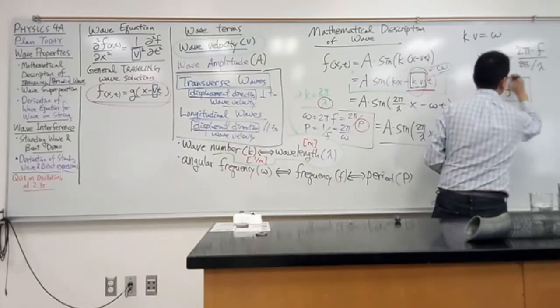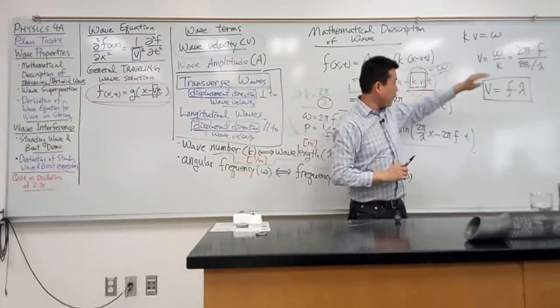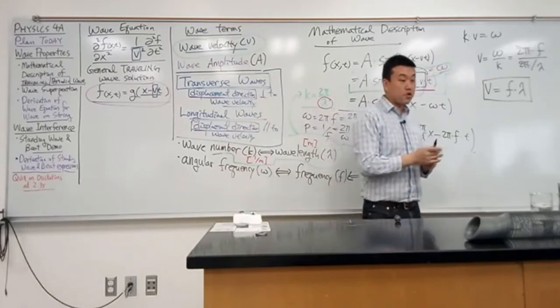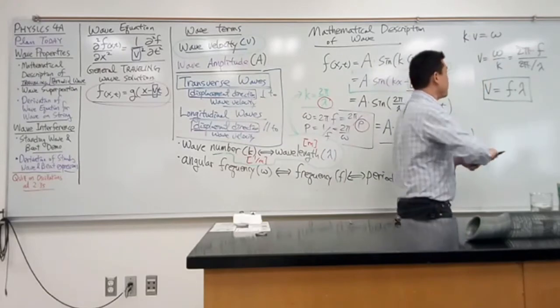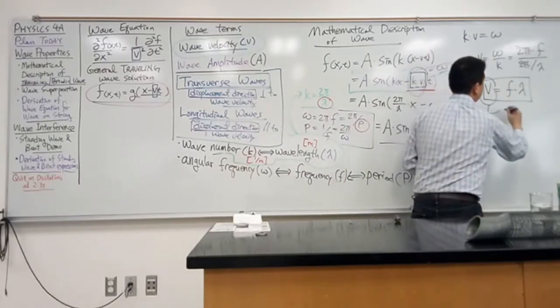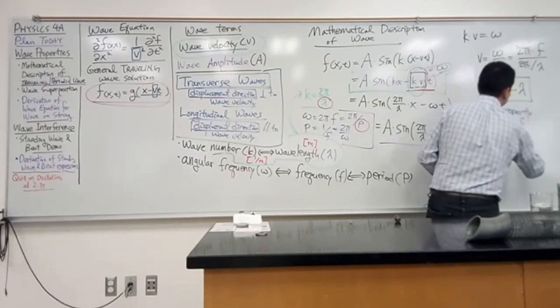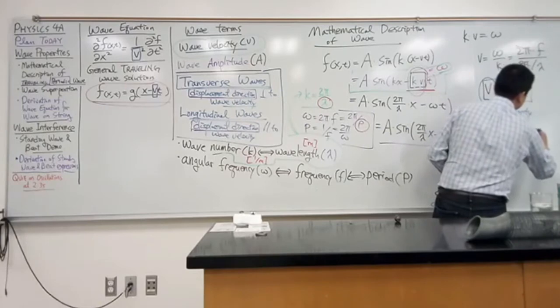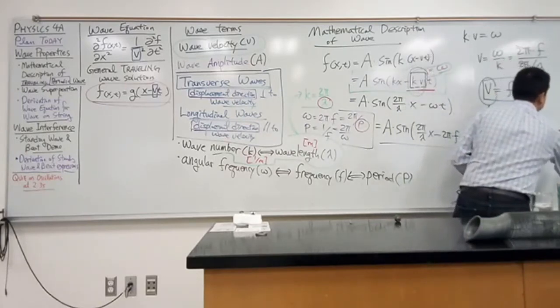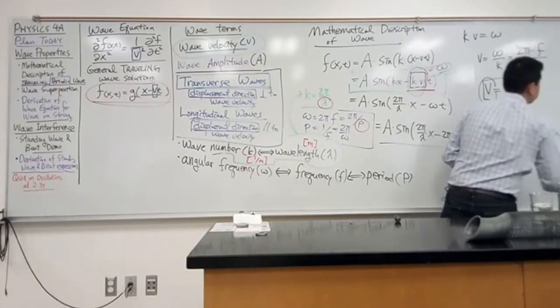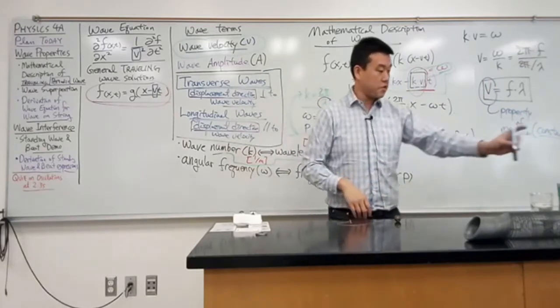This is one of the most important relationships. But as you learn this relationship, what you have to know and memorize and internalize is the fact that this wave velocity V is property of medium. Property of medium. Another way to say it is in most cases, this V is a constant.